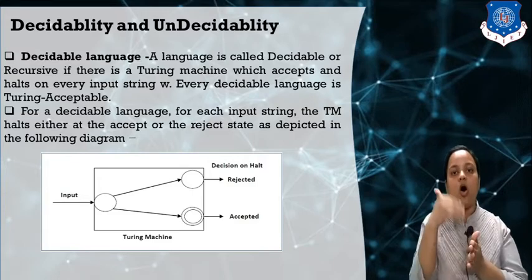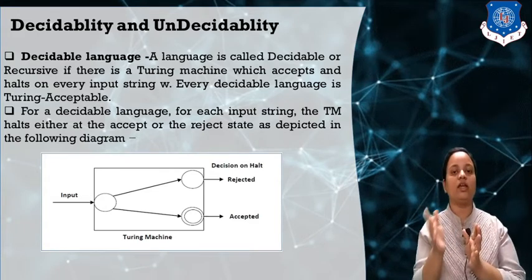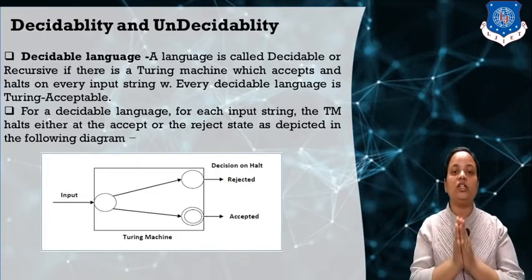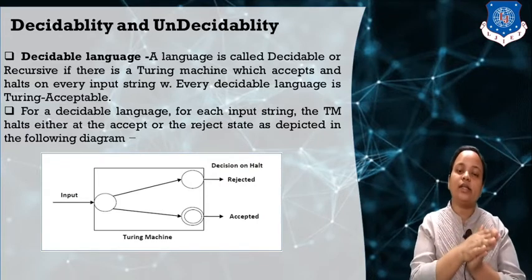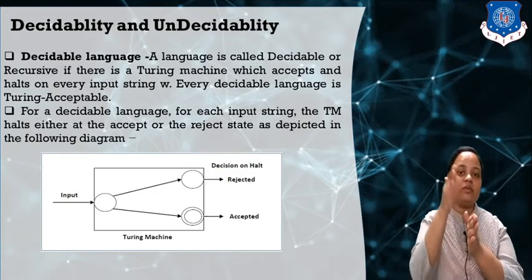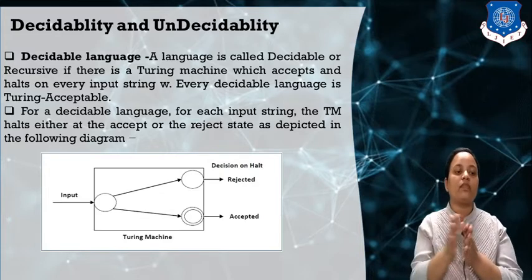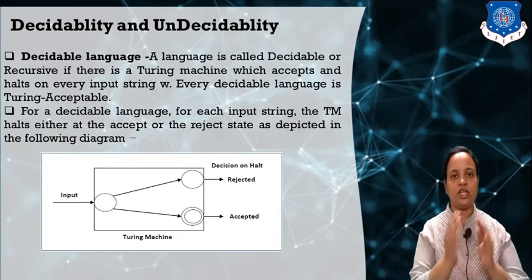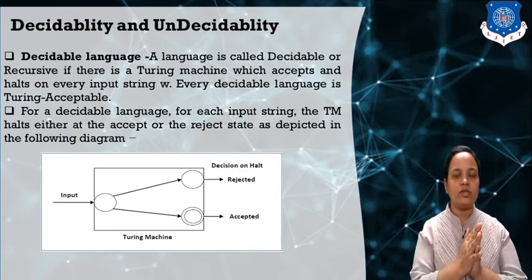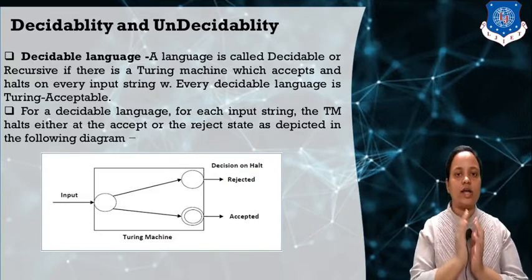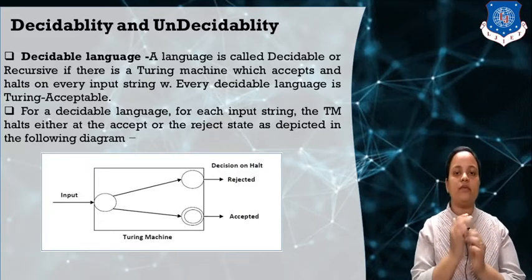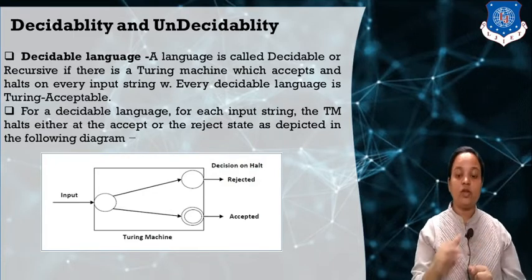Halt means either it halts on an accepting state or on a rejecting state. If the string does not belong to that language, the Turing machine will halt on a rejecting state. So for a decidable language, for each input string, the Turing machine halts either in an accept state or a reject state — it always halts. As shown in the diagram, the Turing machine takes input strings and moves either to an accepting state or a rejecting state. This is called the decidable language.